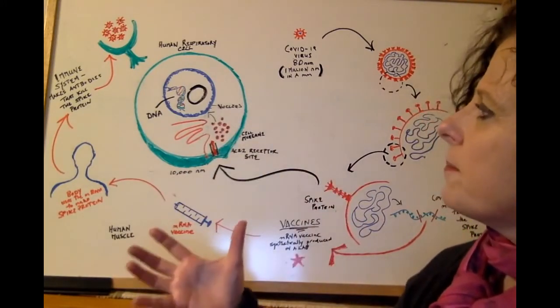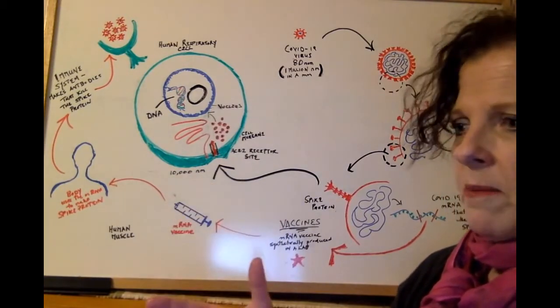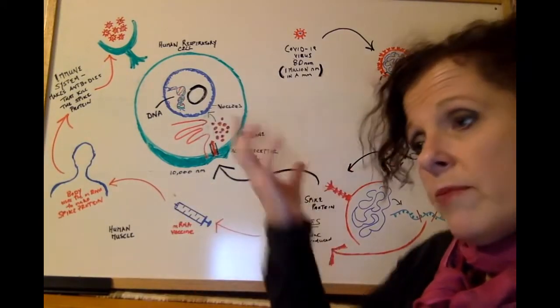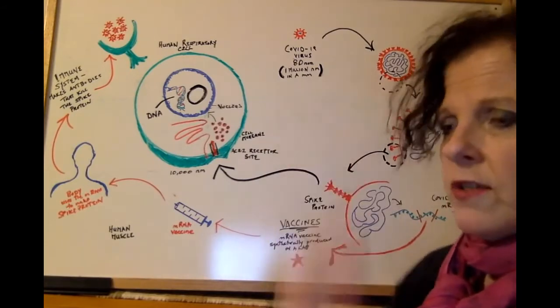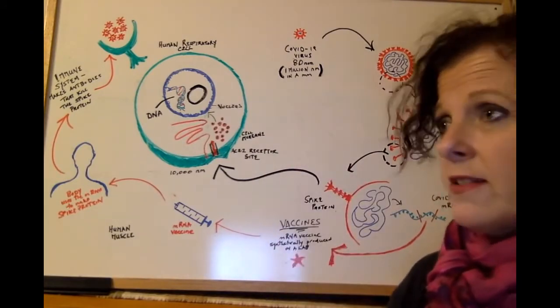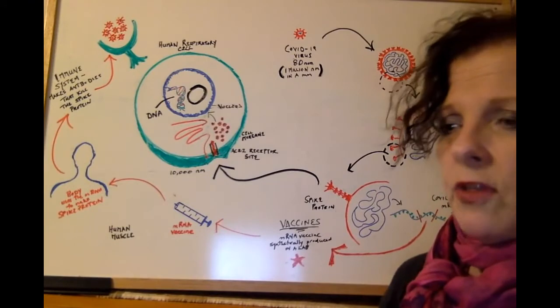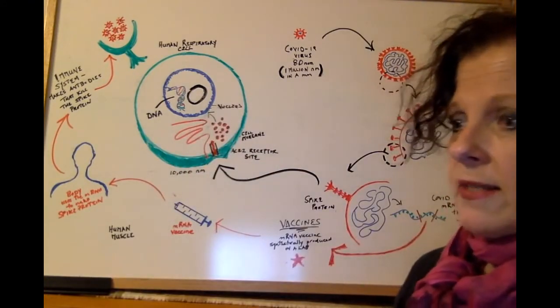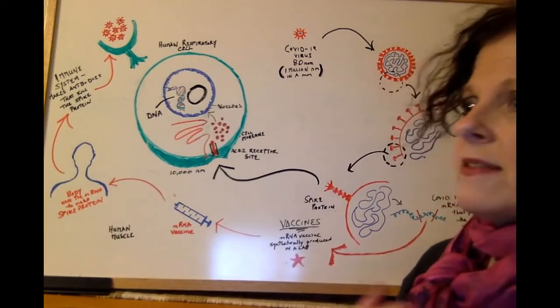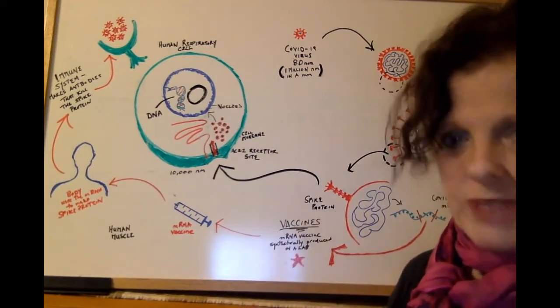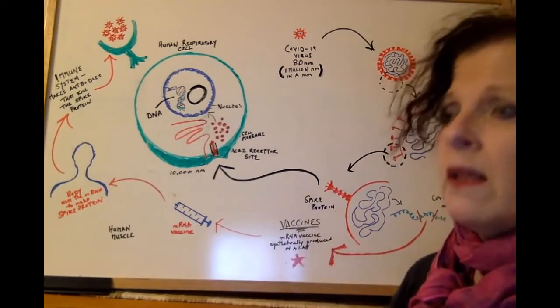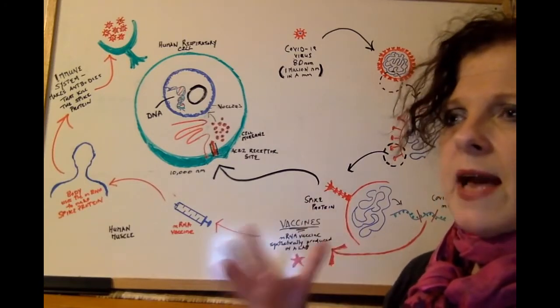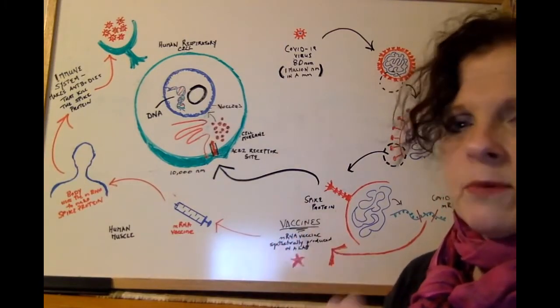The cells differ from part of the body to part of the body. Cells in the brain are brain cells and they provide function to the brain. Cells in the heart are heart cells. They allow the heart to function so you can have your blood beating around your body. Cells in the skin are skin cells. And cells in the lungs are lung cells or respiratory cells. And that's the main cell that COVID-19 has an effect on, where it does most of its damage.